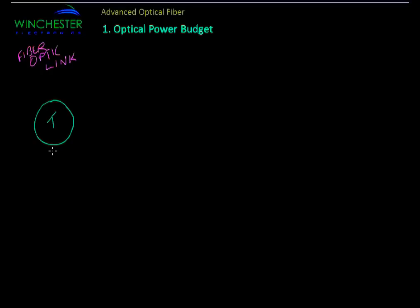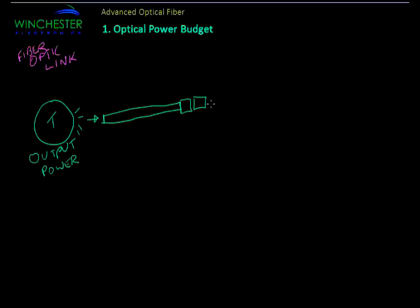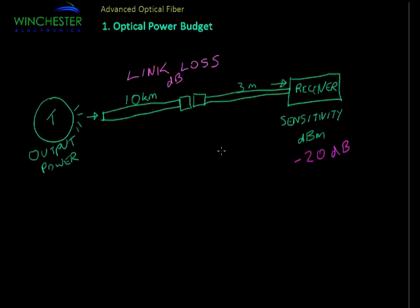As discussed, we have a transmitter and a receiver. An important parameter on the transmitter is the optical output power. Just like the lamp we saw, this optical output travels in one direction, through a fiber and through a number of connectors and other devices in the optical link. For the moment we'll use two fibers and one connector. On the right-hand side we have a receiver, and the important parameter here is the sensitivity. With a typical receiver sensitivity of minus 20 dBm and a typical output power of minus 6 dBm, our optical power budget is 14 dB.